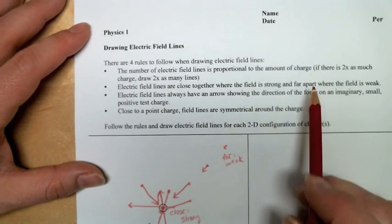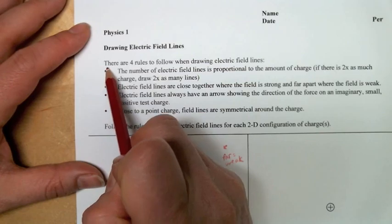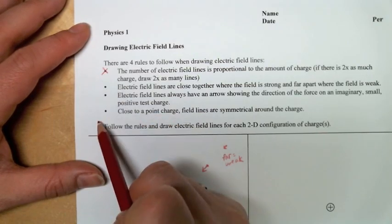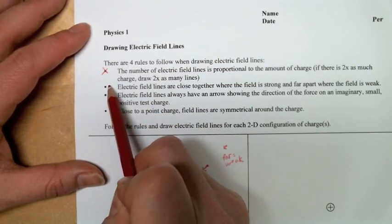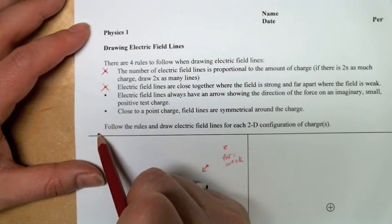The four rules for drawing electric field lines. First, proportionality: more charge, greater field strength. Second, strength is indicated by the spacing. Closer equals stronger.